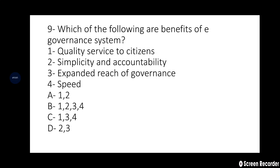Ninth question: Which of the following are benefits of an e-governance system? 1: Quality services to citizens, 2: Simplicity and accountability, 3: Expanded reach of governance, 4: Speed. Options — A: 1 and 2 only, B: 1, 2, 3 and 4, C: 1, 3, 4, D: 2 and 3. The right answer is option B — all four are benefits of the e-governance system. The main vision was to build digital infrastructure reaching every citizen.